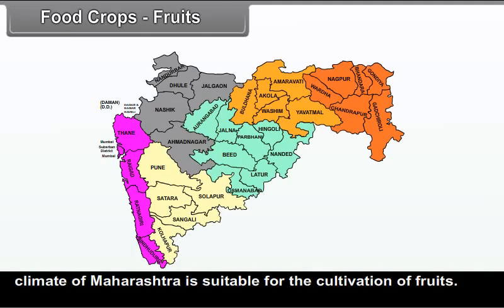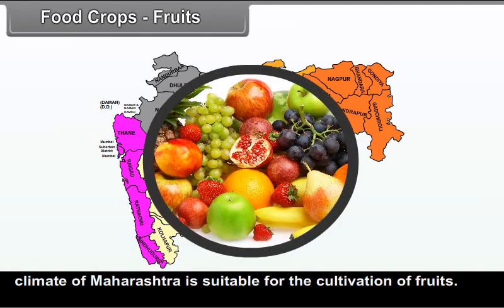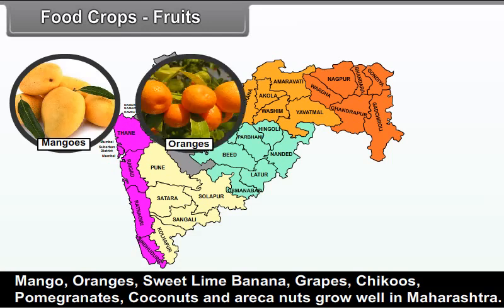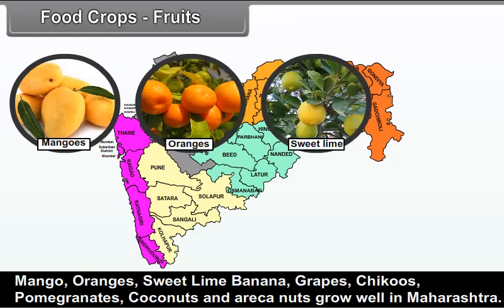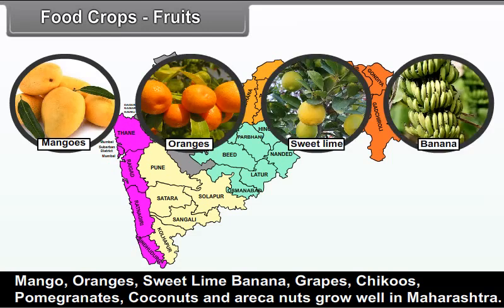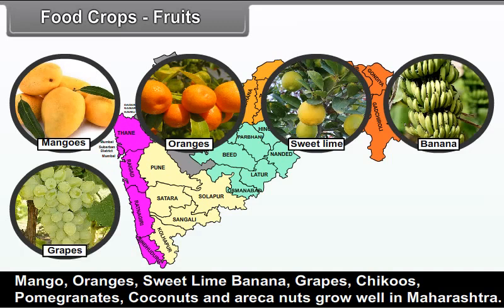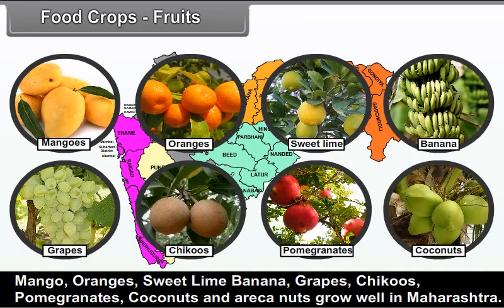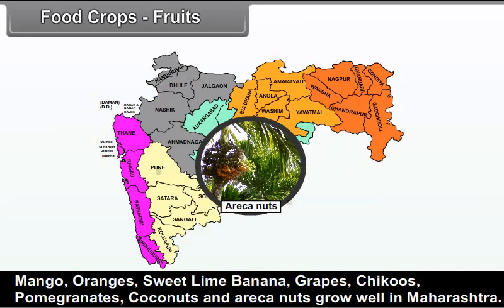Fruits: The climate of Maharashtra is suitable for the cultivation of fruits. Mango, oranges, sweet lime, banana, grapes, chikus, pomegranates, coconuts, and areca nuts grow well in Maharashtra.